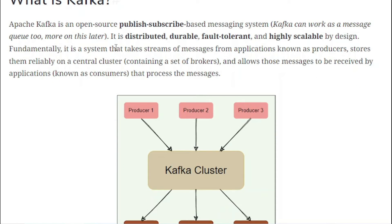Kafka is distributed, durable, fault-tolerant, and highly scalable by design. Fundamentally, it is a system that takes streams of messages from applications known as producers, stores them reliably on a central cluster — which is a set of brokers — and allows those messages to be received by applications known as consumers. Kafka is a separate broker deployed on another server that receives messages from producers and delivers them to consumers.